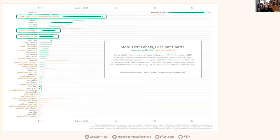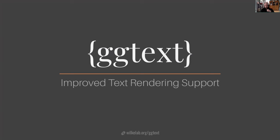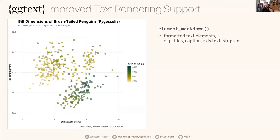I want to highlight two packages for annotations: ggtext and ggforce. ggtext is a package developed by Claus Wilke that improves text rendering support in ggplot. If you've worked with ggplot, you know it's pretty tedious to change fonts or make labels with different colors or styling. ggtext solves these issues — not the fonts per se, but the styling. For fonts, the systemfonts package and the ragg package work very well. The extrafont and showtext packages are other options, but the newer systemfonts package works better for me.